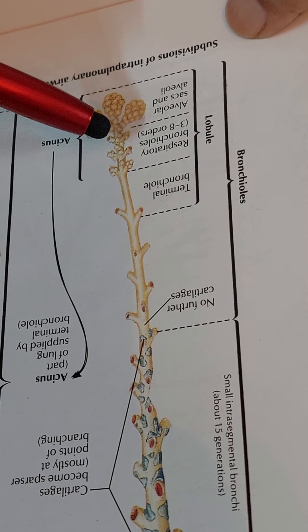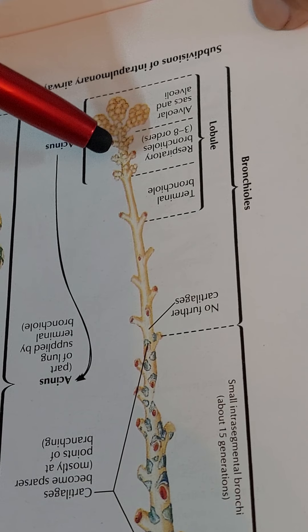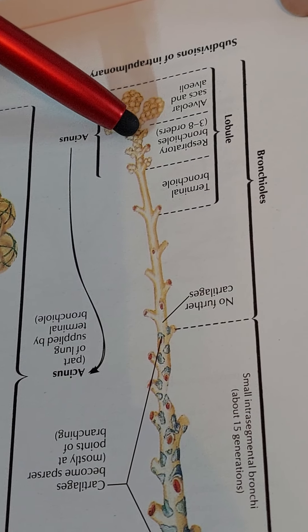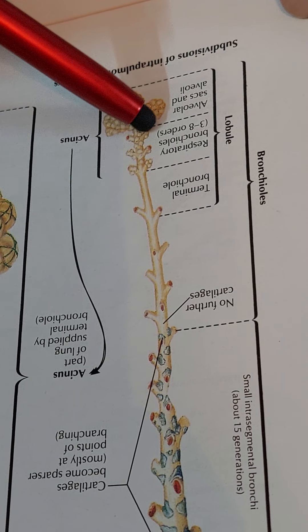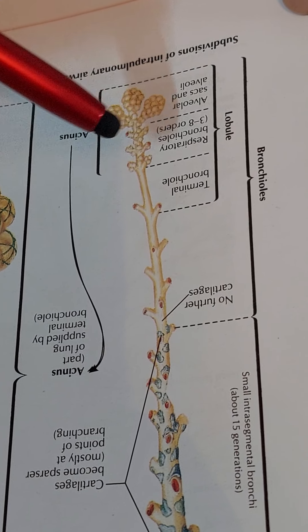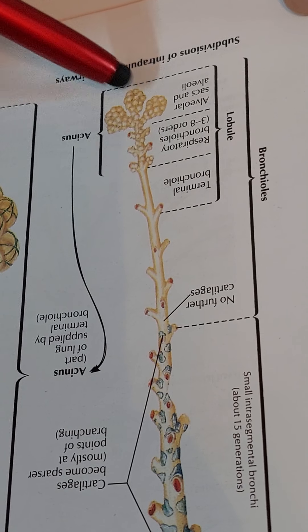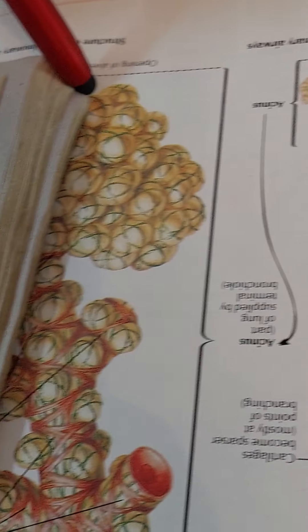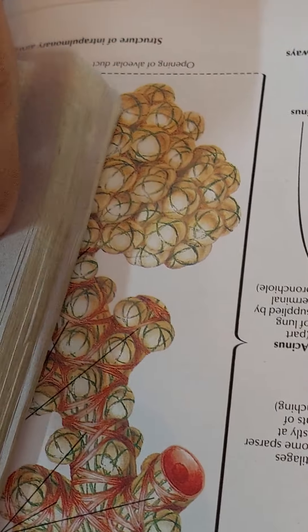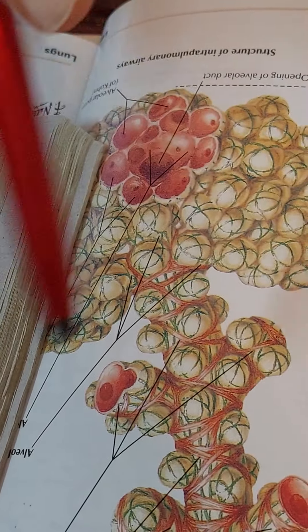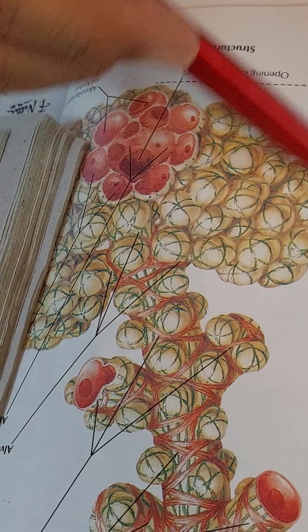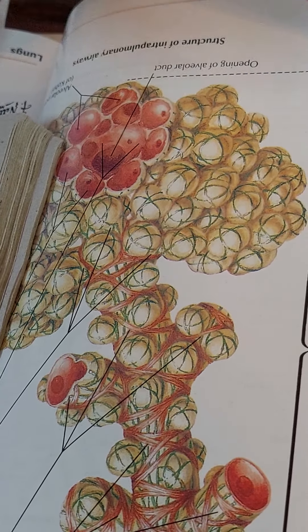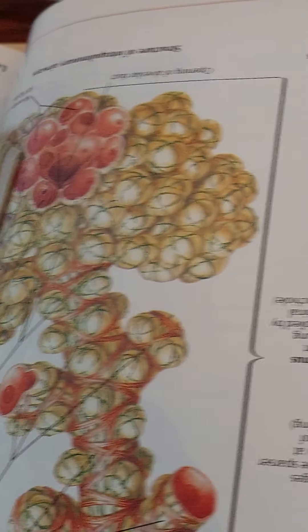Ultimately, these respiratory bronchioles lead into the alveolar sacs. These alveolar sacs, or alveoli, form the acinus.